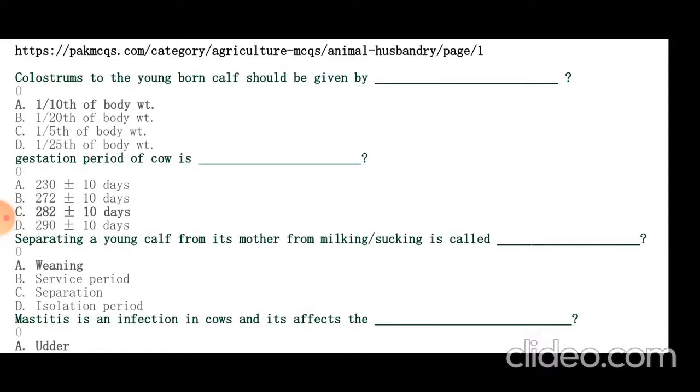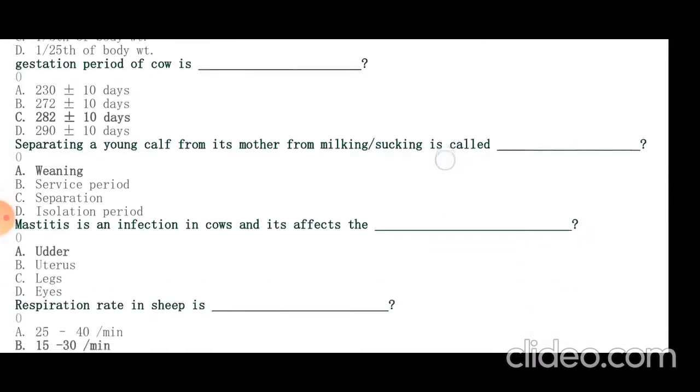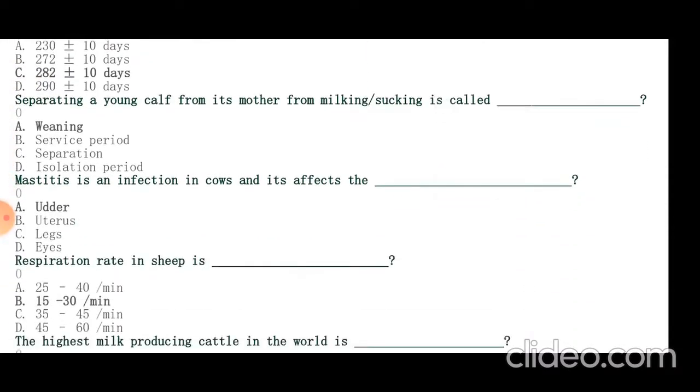Separating a young calf from its mother from milking or suckling is called weaning. Mastitis is an infection in cows that infects the udder.